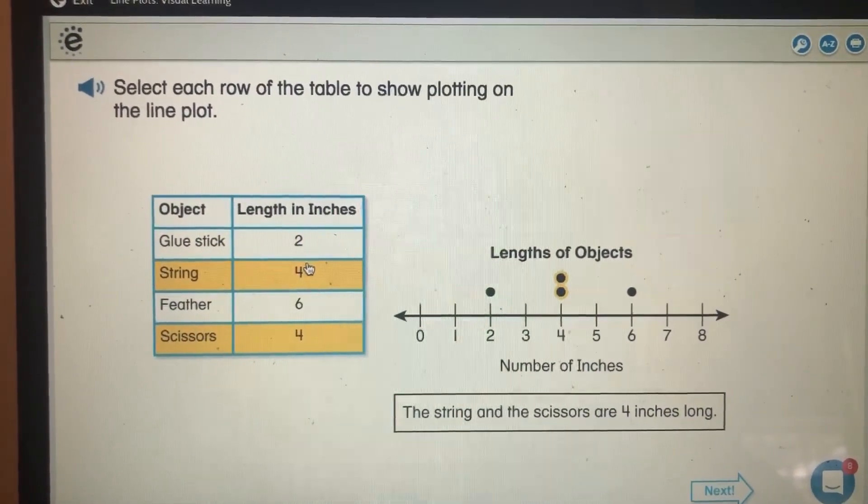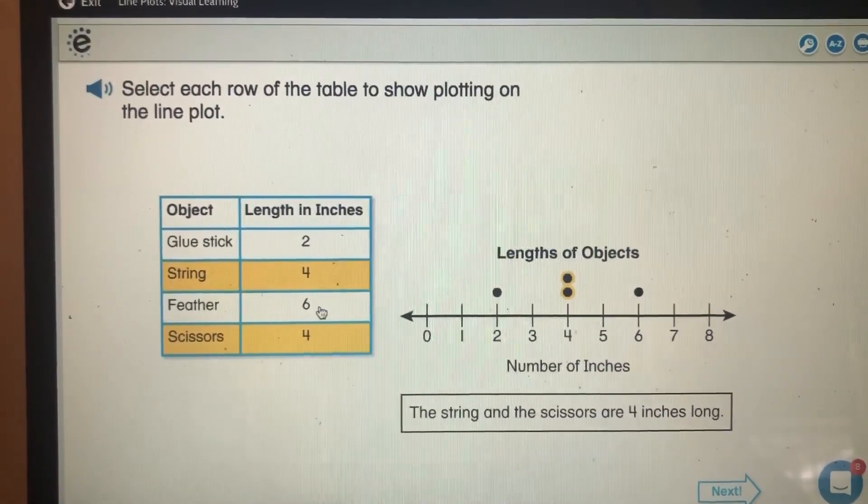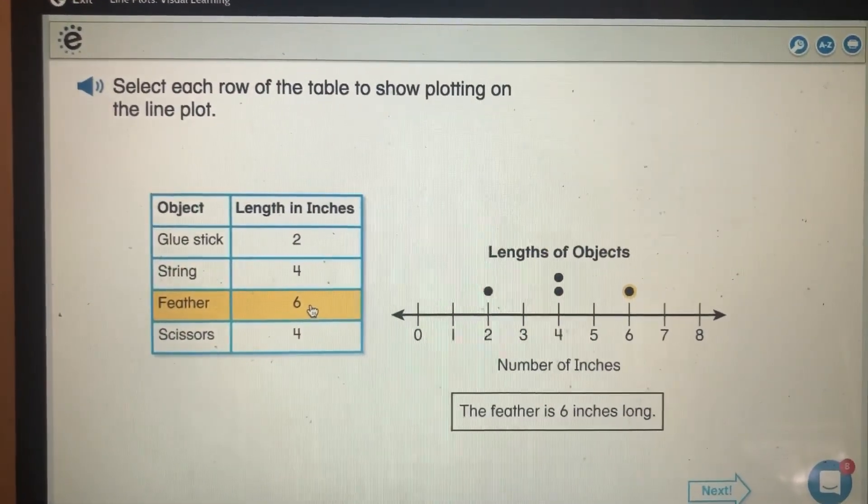The glue stick is two inches long. The string and the scissors are four inches long. The feather is six inches long.